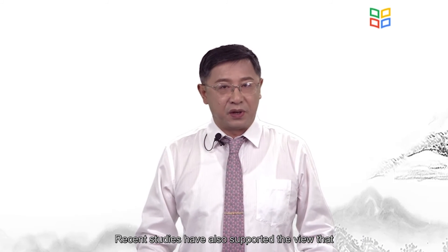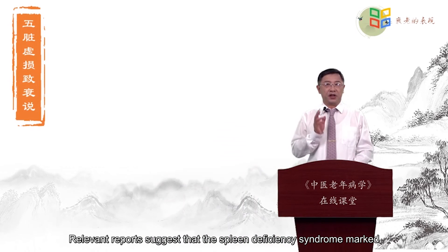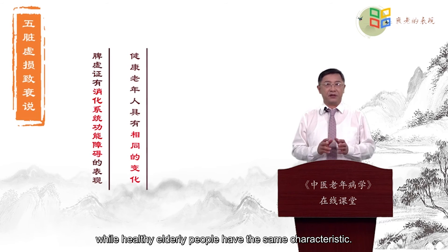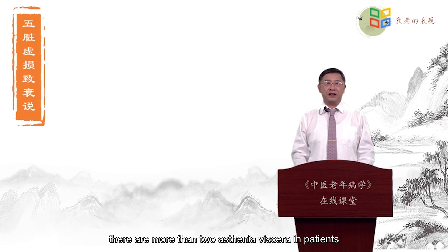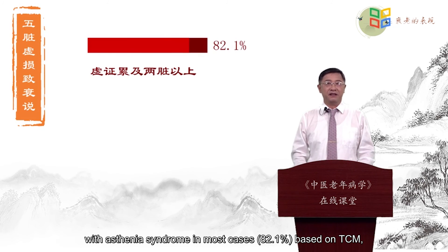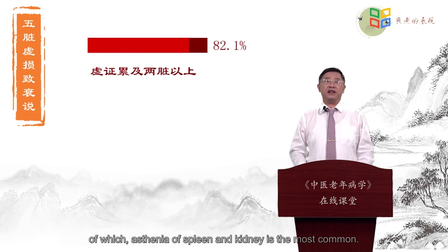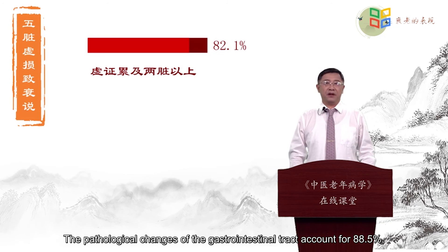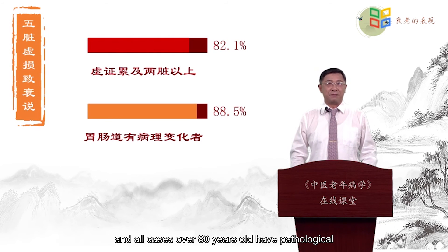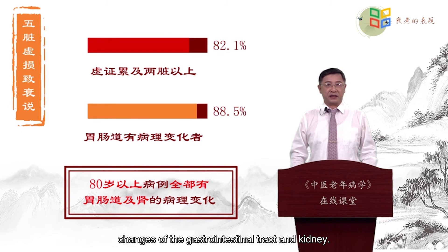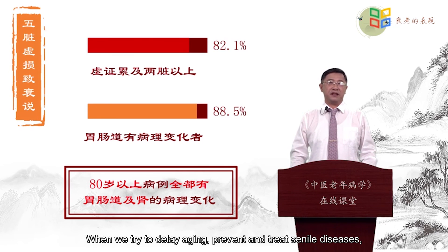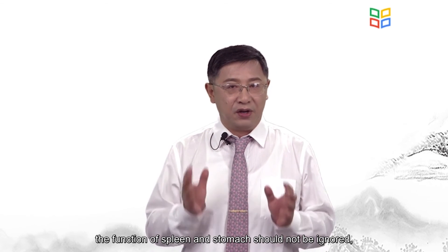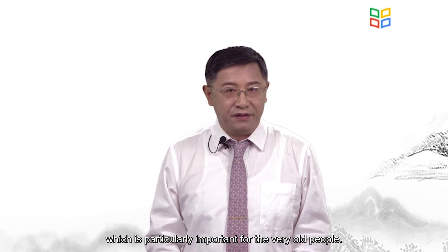Recent studies have also supported the view that aging is associated with deficiency of the spleen and stomach. Relevant reports suggest that spleen deficiency syndrome, marked by dysfunction of the digestive system, is characteristic of healthy elderly people. Clinical pathological anatomical data prove that there are more than two deficient viscera in patients with deficiency syndromes in most cases based on TCM, of which deficiency of the spleen and kidney is the most common. Pathological changes of the gastrointestinal tract accounted for 88.5%, and all cases over 80 years old have pathological changes of the gastrointestinal tract and kidney. These data show that deficiency of the spleen and stomach is closely related to aging. When trying to delay aging, prevent and treat senile diseases, the function of spleen and stomach should not be ignored, which is particularly important for the very elderly.